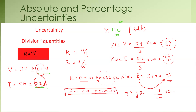The uncertainty always adds whether the quantities are multiplied, divided, added, or subtracted. But when multiplication or division happen, the quantities do not have the same units. That is why, instead of directly adding the uncertainties, we add the percentage uncertainties.